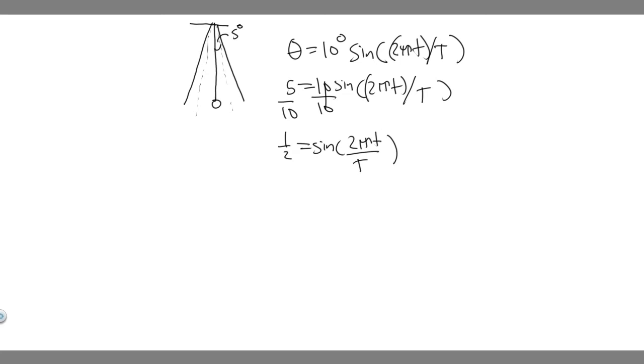So essentially you're going to get one half equals the sine of 2 pi t all over T. So what we're going to want to do is find what t equals, the time. We're trying to solve for time in a relationship with the period.